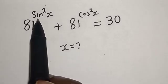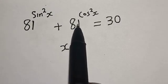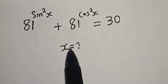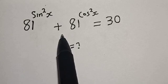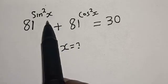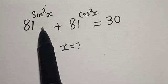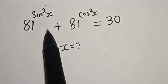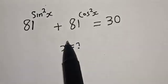81 raised to the power sine squared x plus 81 raised to the power cosine squared x is equal to 30. Hi everyone, welcome to my class. In this class, we want to find the value of x from this given nice trigonometric equation: 81^(sin²x) + 81^(cos²x) = 30.